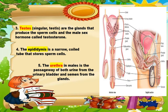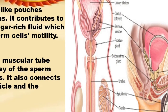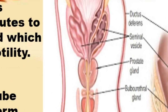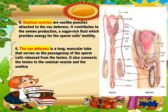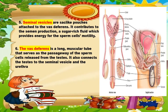The fifth one is the seminal vesicles. These are sac-like pouches attached to the vas deferens. It contributes to semen production — a sugar-rich fluid which provides energy for the sperm cells' motility.